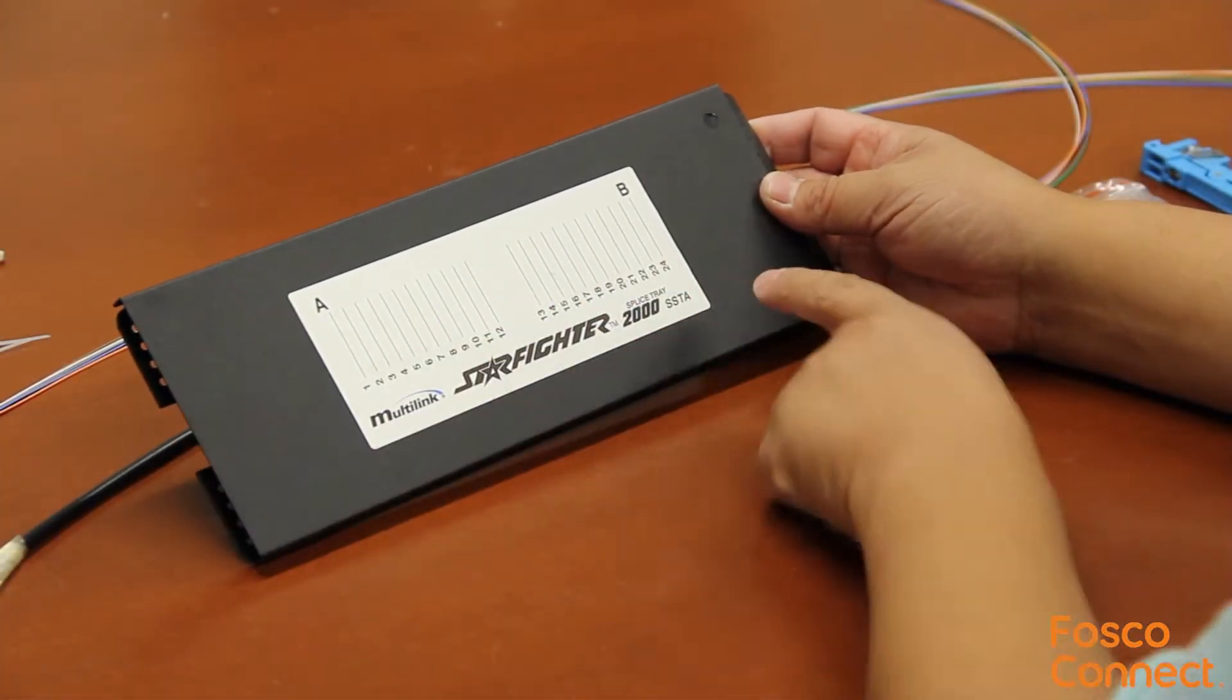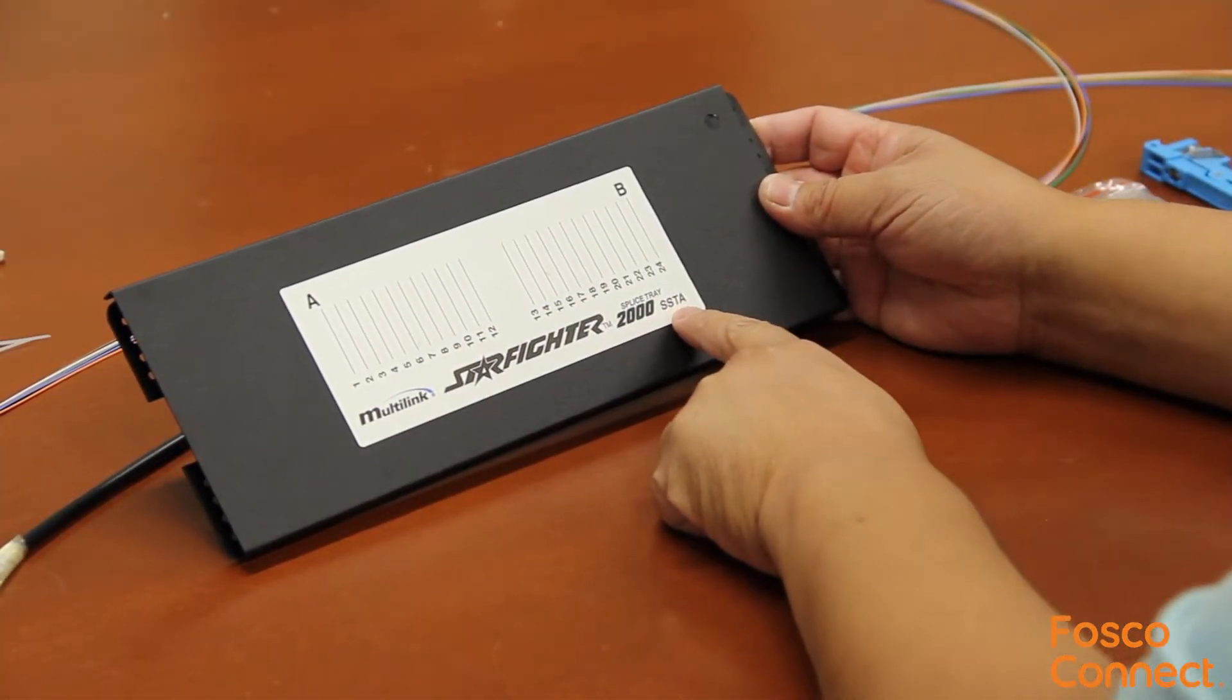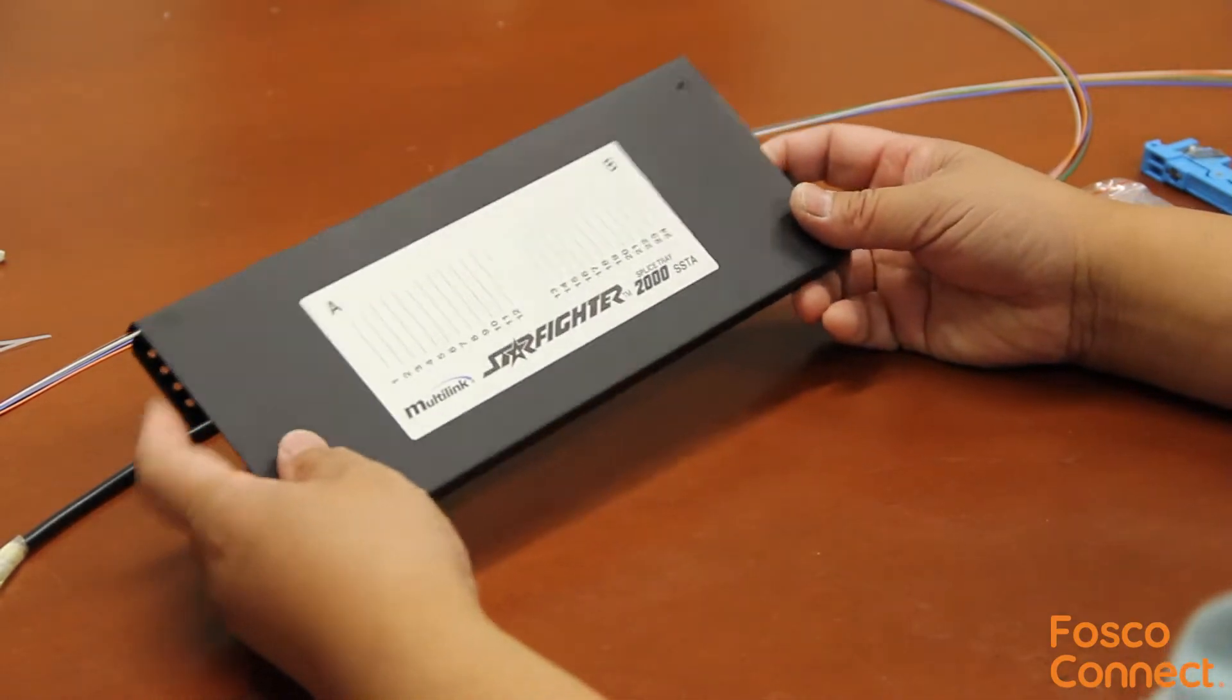This is the Multilink Startfighter 2000-SSTA fiber splice tray. It is made out of aluminum and black anodized.